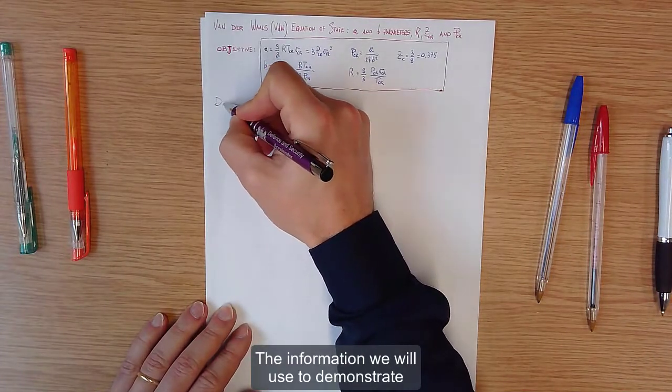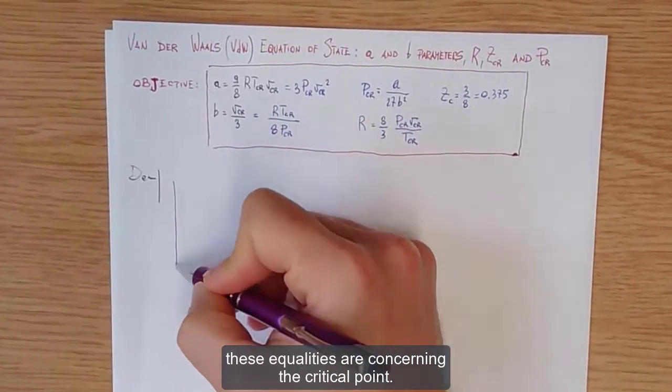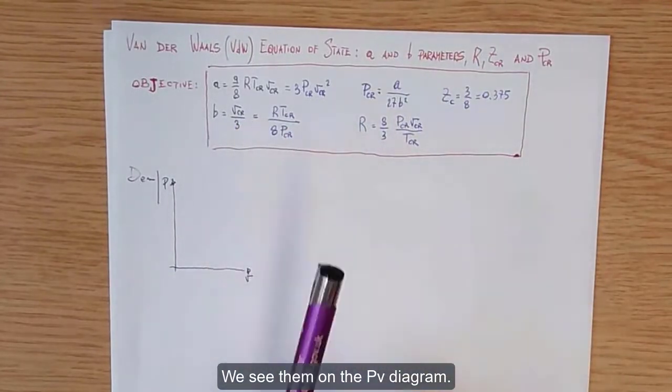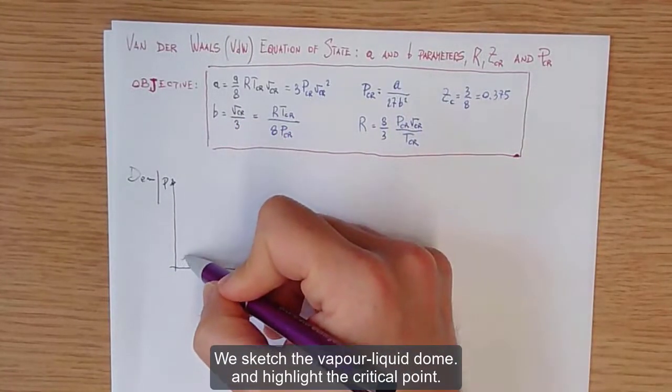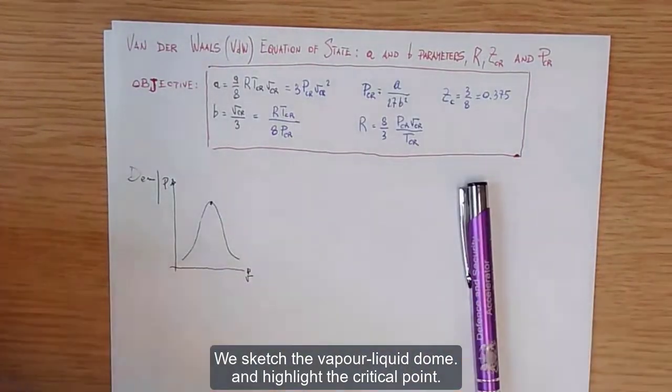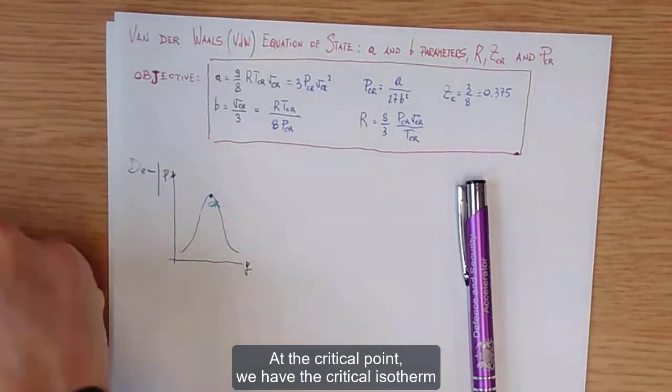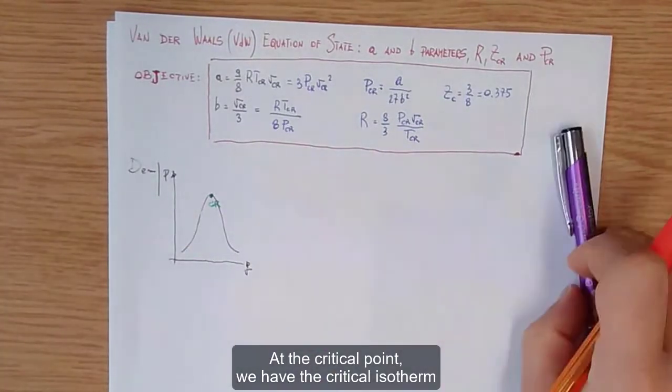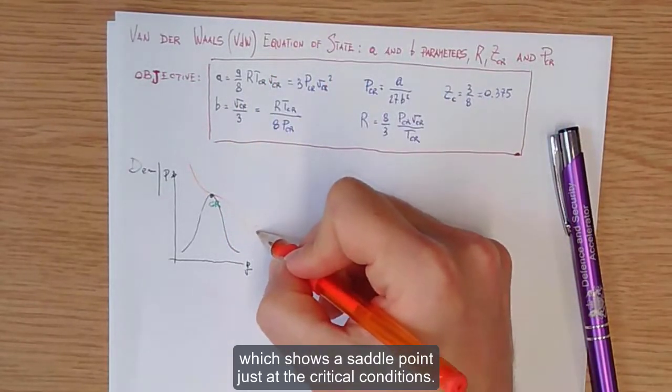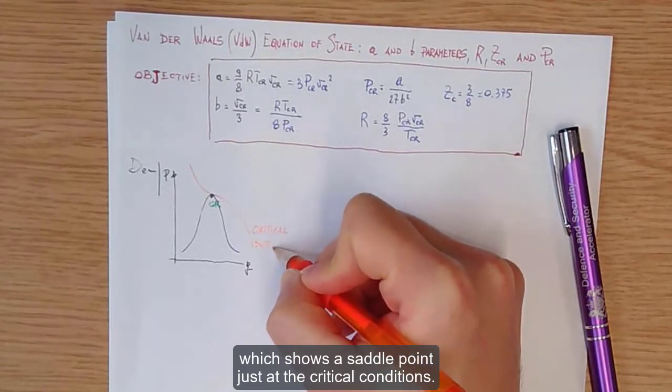The information we will use to demonstrate these equalities are concerning the critical point. We see them on the p-v diagram. We sketch the vapor-liquid dome and highlight the critical point. At the critical point we have the critical isotherm which shows a subtle point just at the critical conditions.